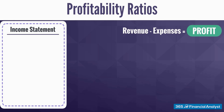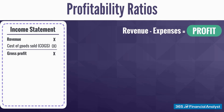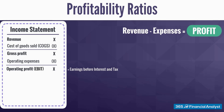Profitability can be calculated on several different levels. Let's briefly recap. First, we have Revenue. Then, the Cost of Production is recorded in the Cost of Goods Sold line. Revenue minus COGS equals Gross Profit. In turn, Gross Profit minus Operating Expenses gives us the Operating Profit, also widely known as Earnings Before Interest and Tax, or EBIT.